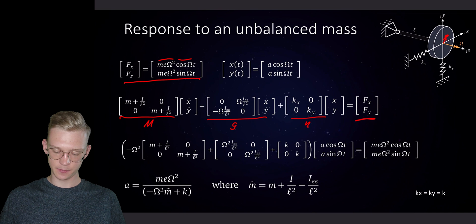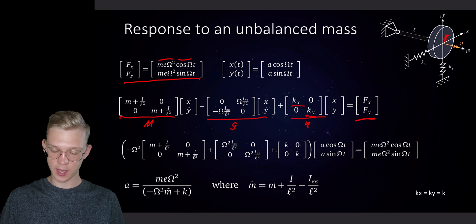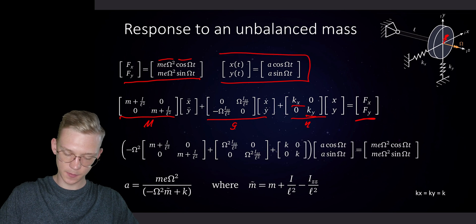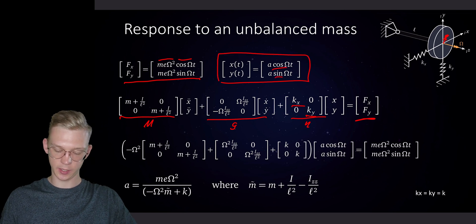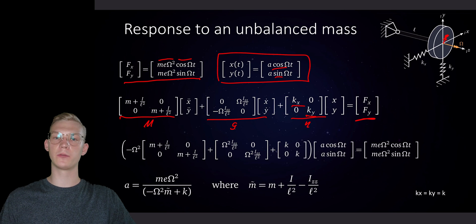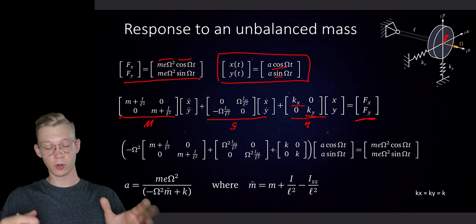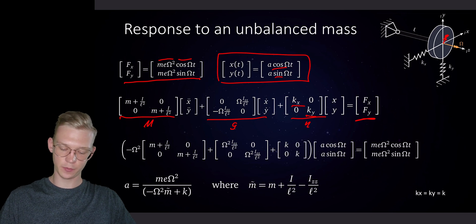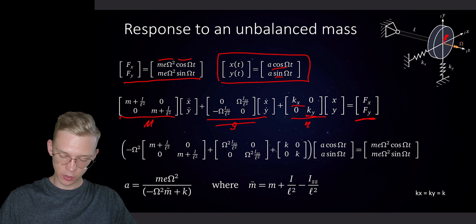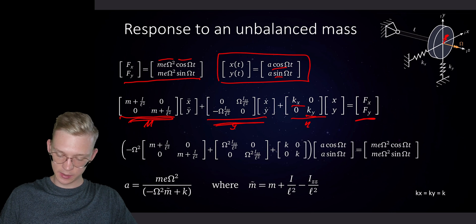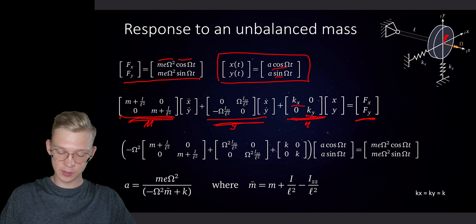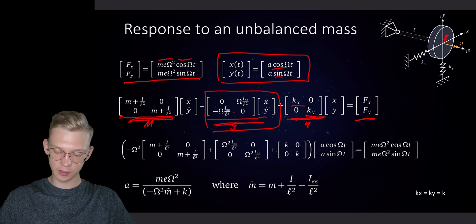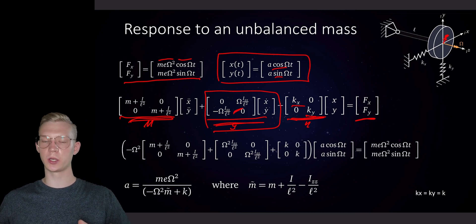For this kind of system where we say that kx and ky are equal, we propose a solution that is a cosine and a sine because if we derive it once and we derive it twice, we will get always the same solution. But we have to be careful because k is a diagonal matrix but g is non-diagonal or it's diagonal but not in the right direction where we want it to be.